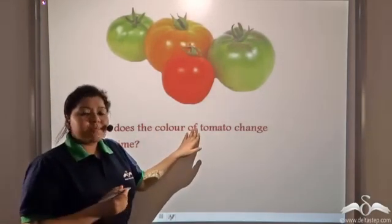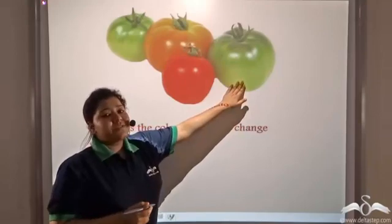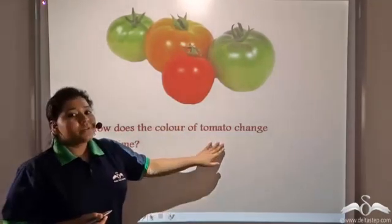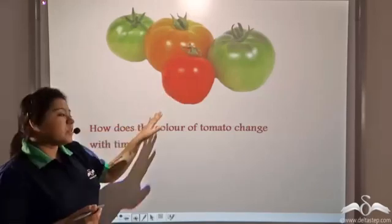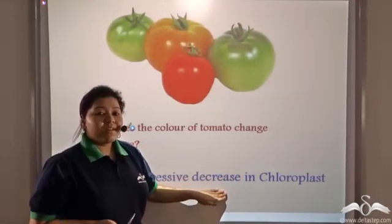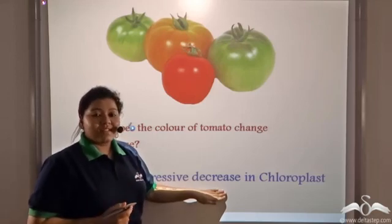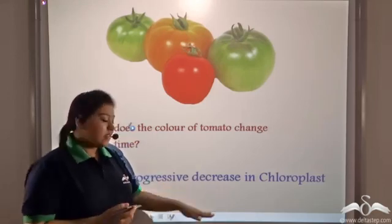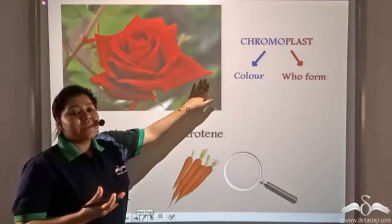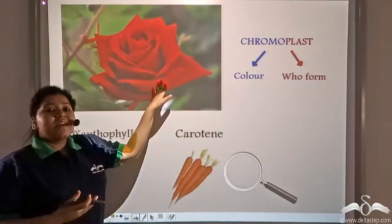Now have you seen an unripe tomato on the plant? If you have, you will see that they are green in colour — very different from the red tomatoes that you have in your salads. Why does the colour of the tomato change from green to red? This is because of the progressive decrease in the number of chloroplasts and the progressive increase in the number of chromoplasts, so the green colour decreases and gives way to the more prominent red colour. Chromoplasts are organelles present in plant cells that have many bright pigments inside them, giving the plant different colours except green.